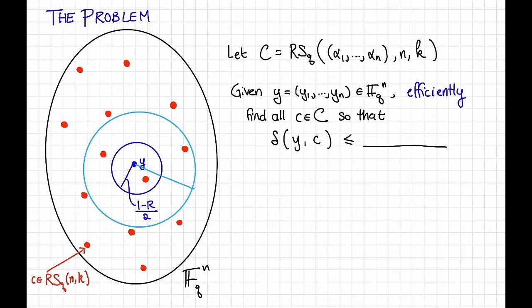You might recall from a previous video that the Johnson bound gives such a radius. So the Johnson bound says if we look at a radius 1 minus the square root of r, then we are guaranteed that there are at most a polynomial number of codewords in this ball. So that sounds like a good goal to start with. So that's going to be our goal for the next couple of videos. We're going to put 1 minus the square root of r here and try to solve this problem.